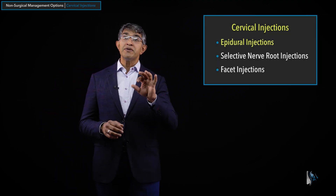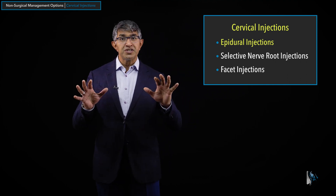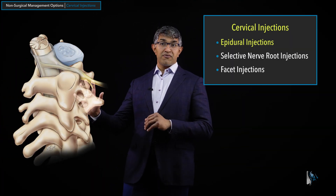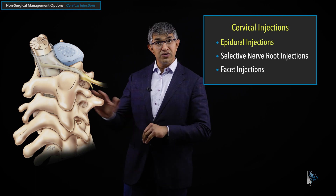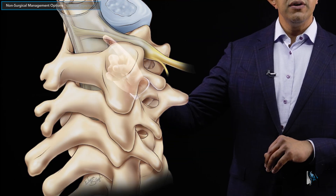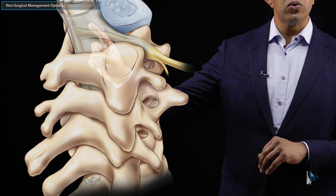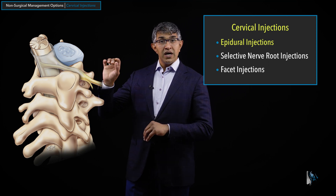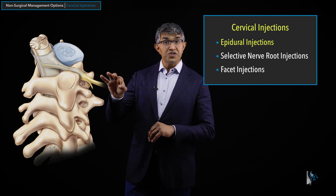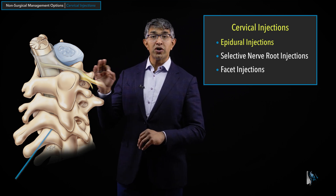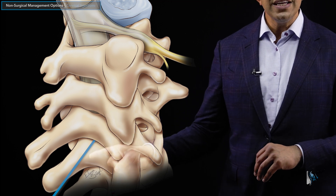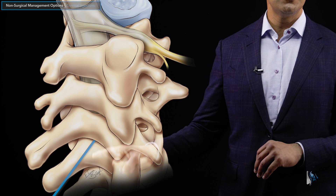The first one we'll talk about is epidural injections. An epidural injection, as the name implies, is an injection where the fluid goes in the space around the dura. Looking at this image from the back in a three-quarter view, you can see the cervical spine — the spinal nerve, the spinal cord, and the disc in the front. An epidural injection in the cervical spine usually goes in between the lamina, so people call it an interlaminar epidural injection. A needle comes in and goes into the space between the two lamina.